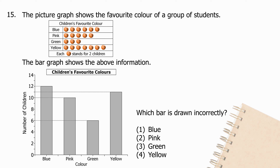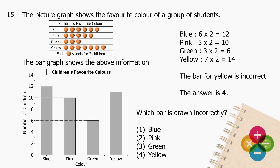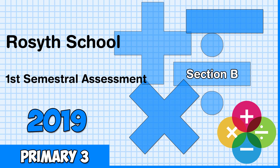Question 15: The picture graph shows the favourite colour of a group of students, and the bar graph shows the same information. Which bar is drawn incorrectly? Blue: 6 × 2 = 12. Pink: 5 × 2 = 10. Green: 3 × 2 = 6. Yellow: 7 × 2 = 14. The bar for yellow is incorrect. The answer is 4.